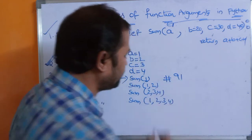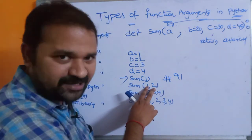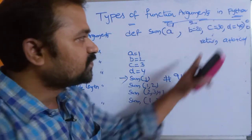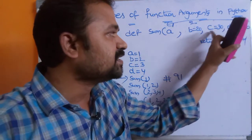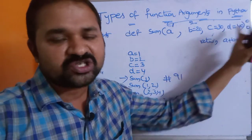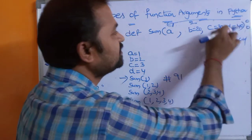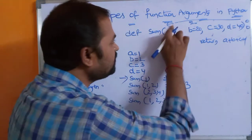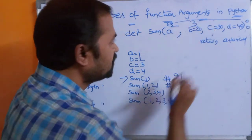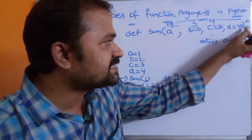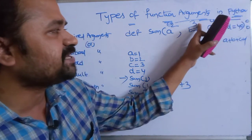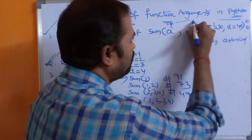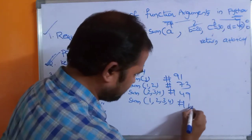For sum(2, 3, 4), a=2, b=3, c=4, and d takes the default value 40, giving 2 plus 3 plus 4 plus 40, which equals 49. For sum(1, 2, 3, 4), all four values are passed: 1 plus 2 plus 3 plus 4 equals 10. The beauty of default arguments is that the function definition contains four arguments but we can call it with fewer.